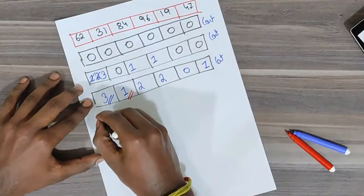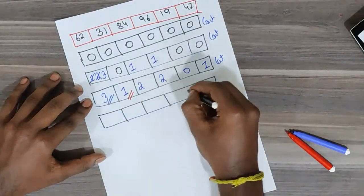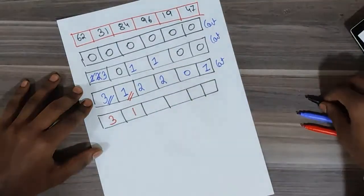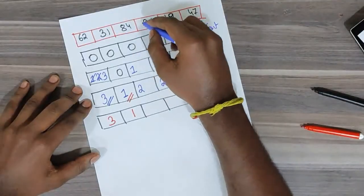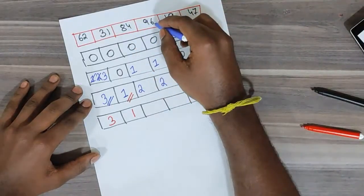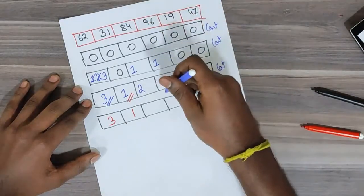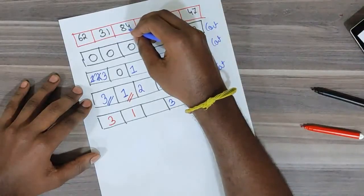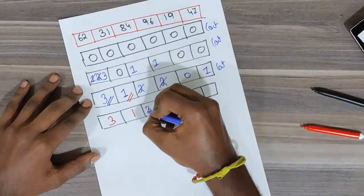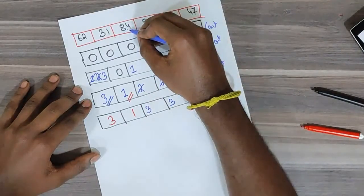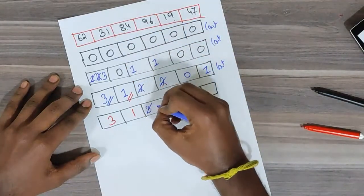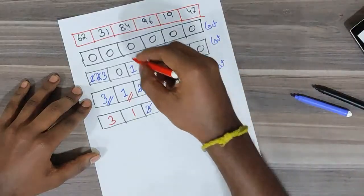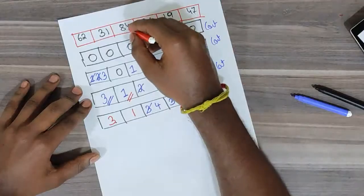After the second iteration, we know the positions of 62 and 31 in the sorted array — 3 and 1 respectively. In the third iteration, we find the final position of 84. Comparing 84 with 96, since 96 is greater, increment 96's count from 2 to 3. Comparing 84 with 19, since 84 is greater, increment 84's count from 2 to 3. Comparing 84 and 47, since 84 is greater, increment 84's count to 4. After the third iteration, 62 gets position 3, 31 gets position 1, and 84 gets position 4.